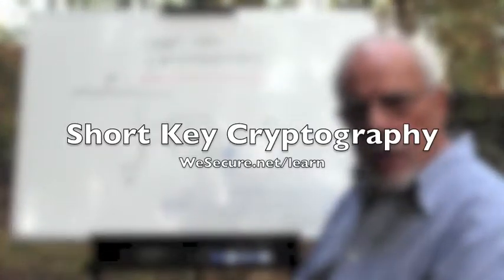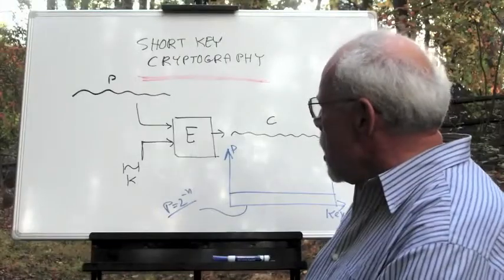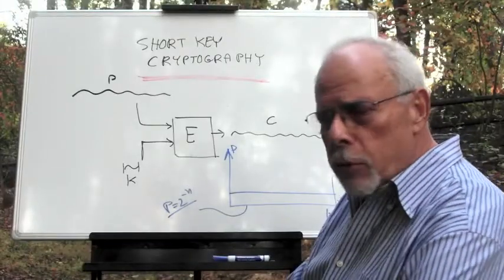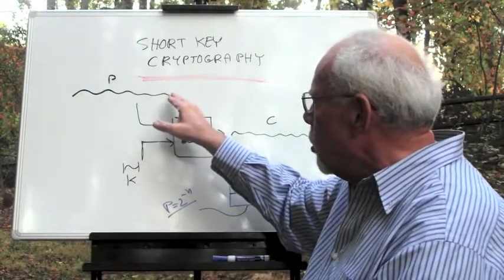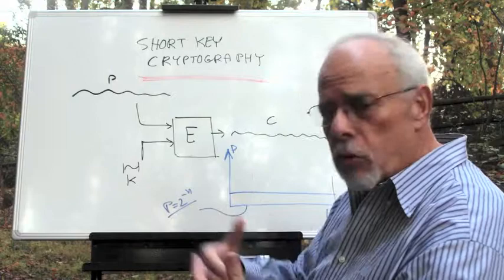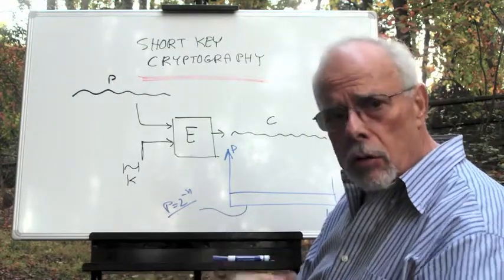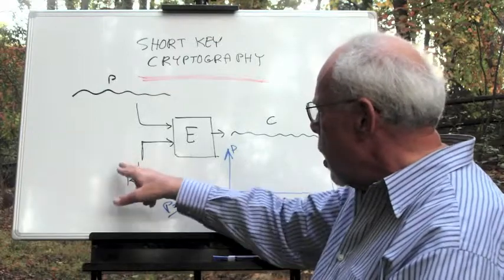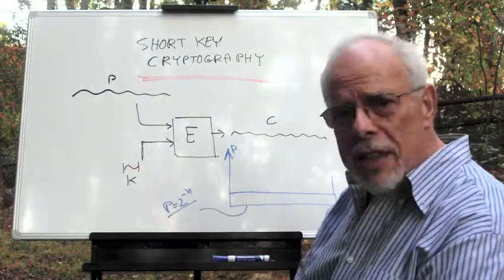Short key cryptography. In a typical cryptographic setting today, we use a long plain text to encrypt. The material to encrypt is long, lots of bits and bytes, a short key, and we produce a long ciphertext.